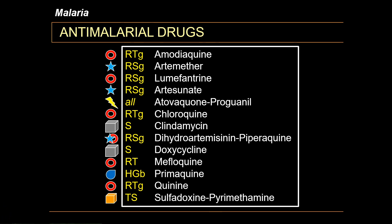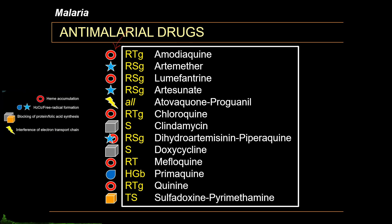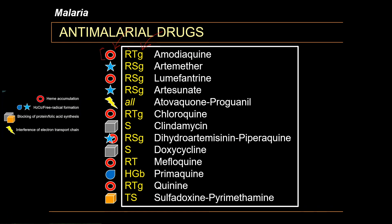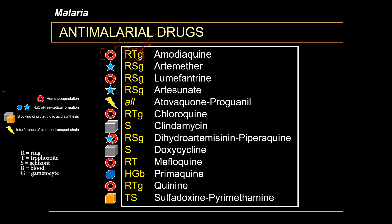Please take note that each drug is paired with its specific mechanism of action and the blood stages it primarily affects. As a review, the heme accumulation symbol, R refers to the ring stage, T refers to the mature trophozoite stage, and G refers to the gametocyte stage. Capitalized letters represent primary modes of action — for example, capital R refers to artesunate's action on the ring stage, capital S on the schizont form, while lowercase g refers to its secondary effect on gametocytes.